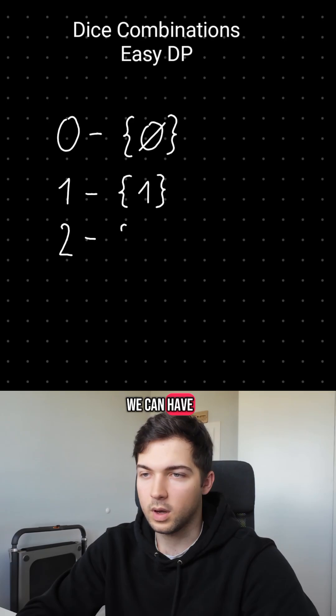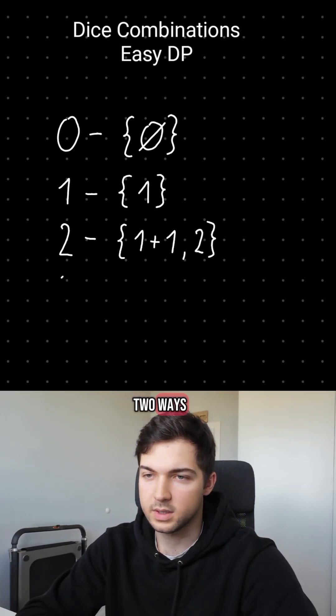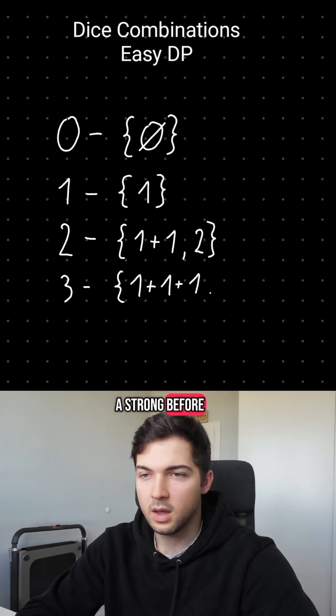For sum 2 we can have 1 and then 1 or just 2, that gives us 2 ways. For sum 3 we have 4 as shown before. And so on.